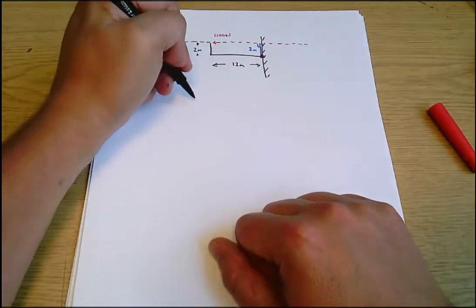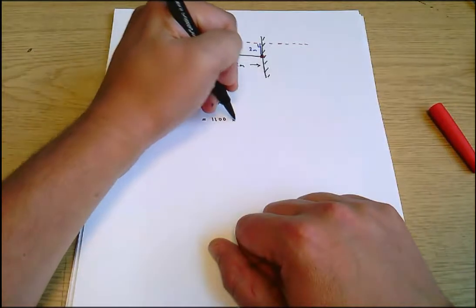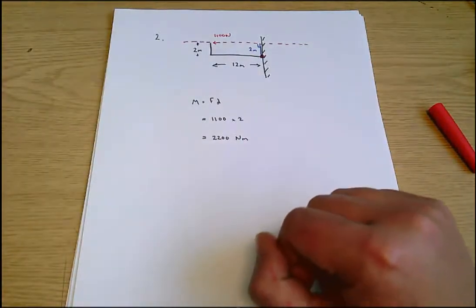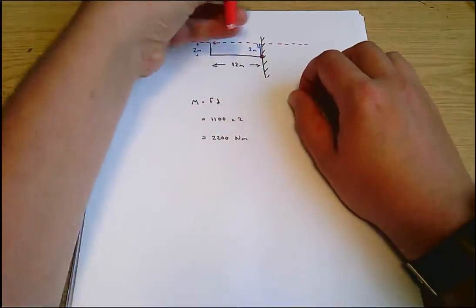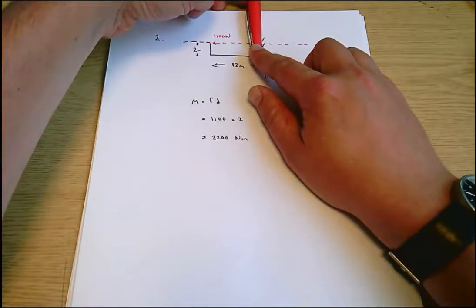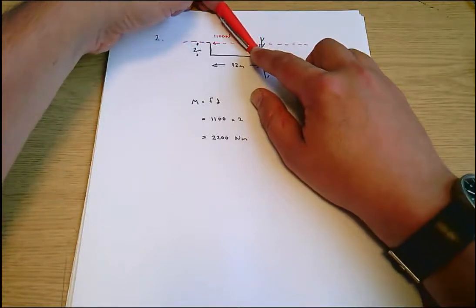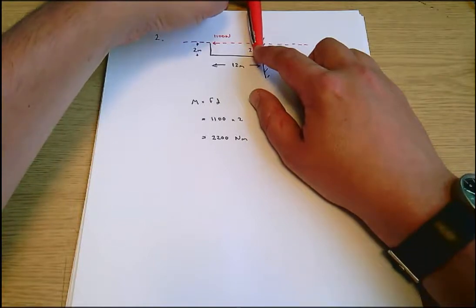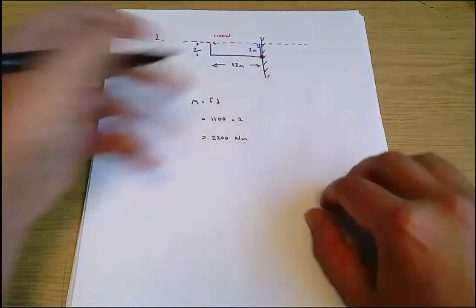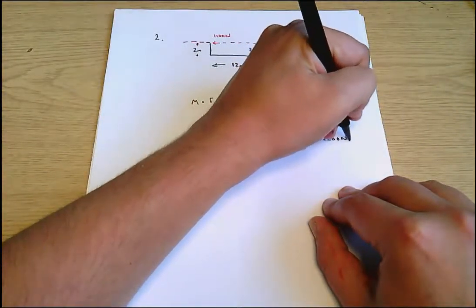Now I can go on and solve the problem. Moment equals force times distance, which equals 1100 times 2, which equals 2200 newton meters. I just need to think about the direction. I lay something over the blue line, fix it at the pivot, imagine applying the force, and see which way it rotates — and it rotates anti-clockwise.